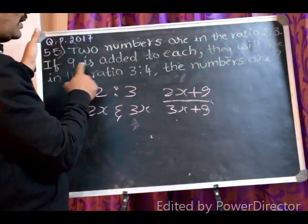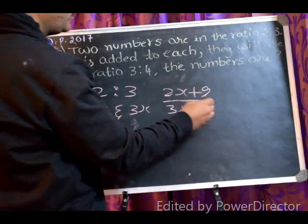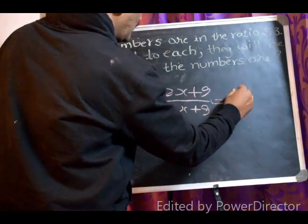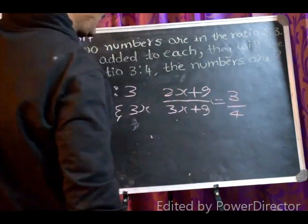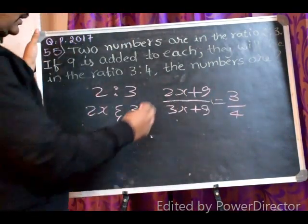So 9 added is, they will be in the ratio of 3 is to 4. Here, 3 is to 4 means we can write 3 by 4. This is one of the equations we have to write like this.